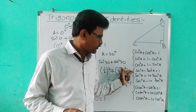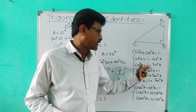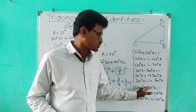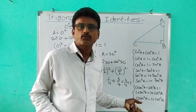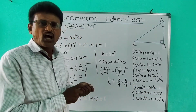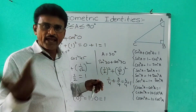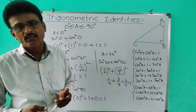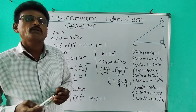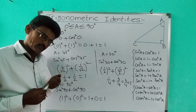Similarly, we can prove that sec²A − tan²A = 1 and cosec²A − cot²A = 1 for all values. We will do some more problems in the eighth video. If you like my videos, please share, comment, and subscribe to my channel. Thank you.